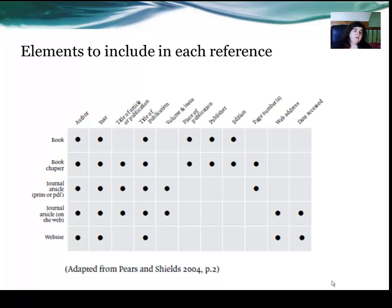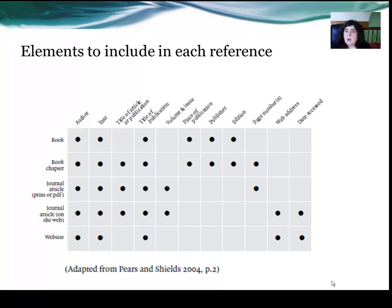If a journal article is on the web, we need: the author, the year, the title of article or publication, the title of publication, the volume and issue, the web address, and the date accessed. When you are unsure about what to include in a reference, please revert back to this slide.